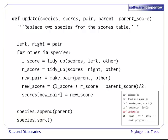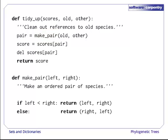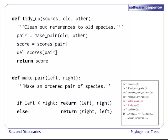Our program now has five functions and a main body, but we're still not done. We need to write the tidy_up function we referred to in update. It, in turn, assumes a function called make_pair that combines a pair of species, which simply constructs a tuple of the species names ordered alphabetically. Remember, we're ordering names so that each pair has a unique representation. Our two new functions fit into our program as shown here.